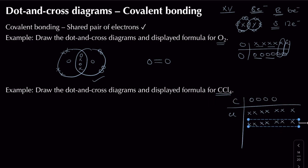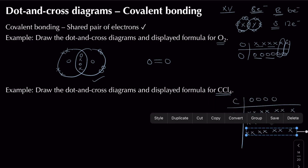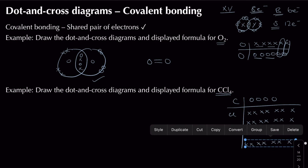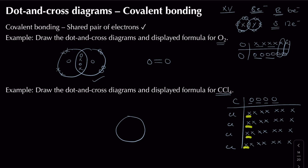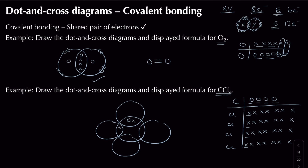With four chlorine atoms to bond, I identify carbon as the central atom because it has the most electrons missing and can form the most bonds. I form one shared pair between carbon and each of the four chlorines. Carbon ends up with 8 electrons in its outer shell — 4 of its own plus one shared from each chlorine.